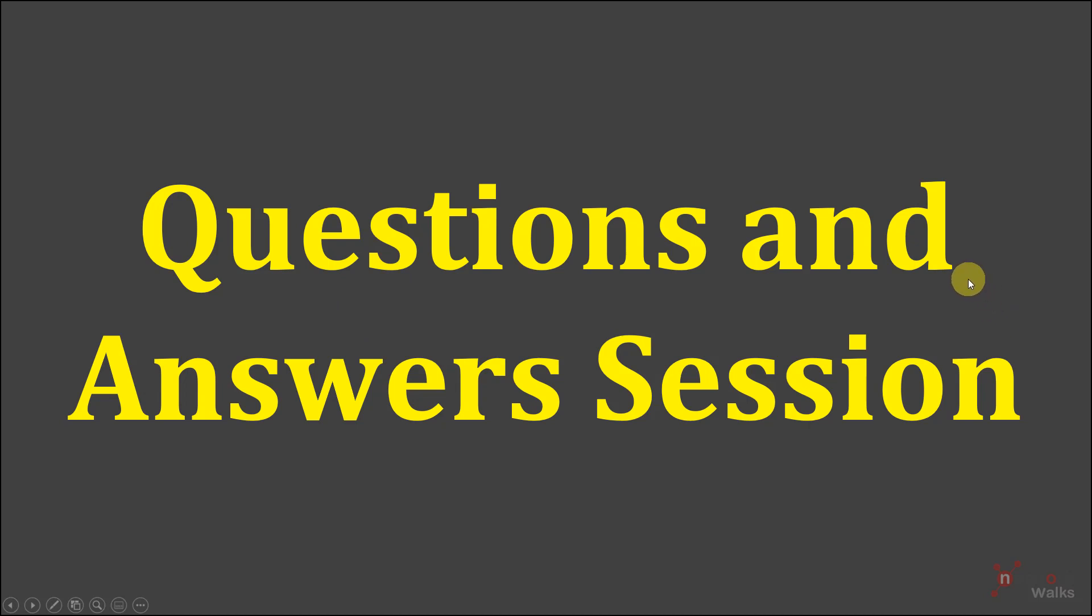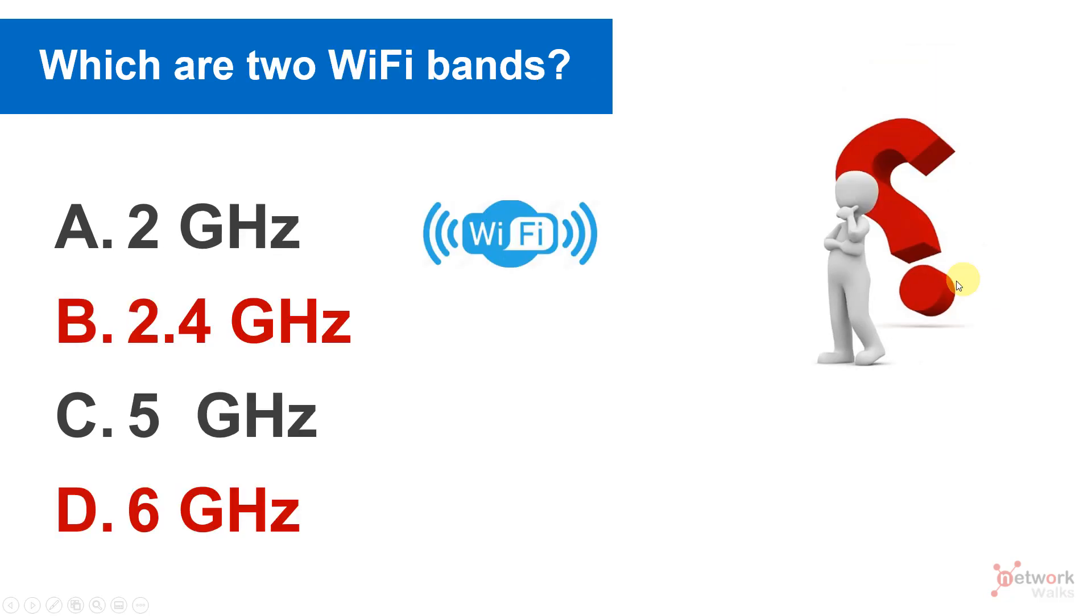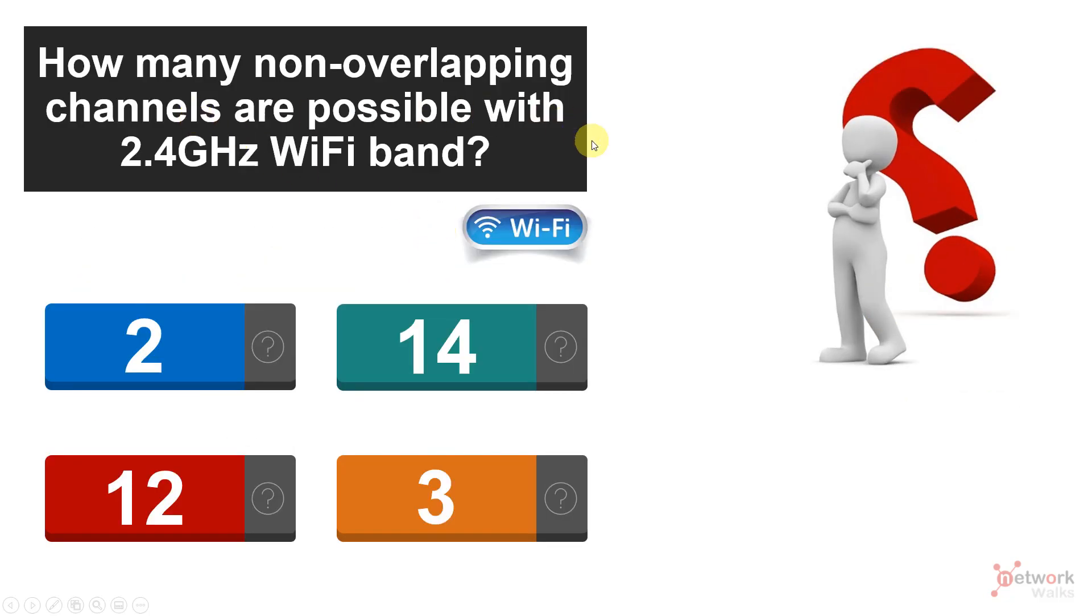Let me ask you a question. Please write your answers in the comment box below. How many non-overlapping channels are possible with 2.4 gigahertz WiFi band? Again, how many channels can we achieve? Which means in one house, how many WiFis can I have which can all operate on 2.4 gigahertz without any interference? So please write your answer in the comments. Is it 2, 14, 3, or 12? If you have any other question, please write in comment section. Thank you for watching.